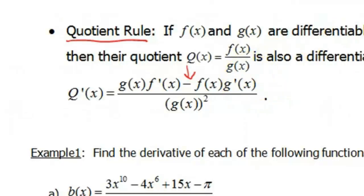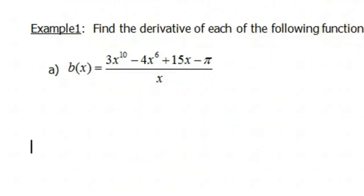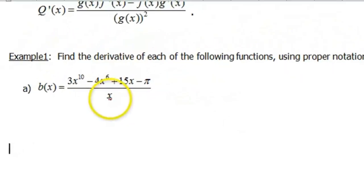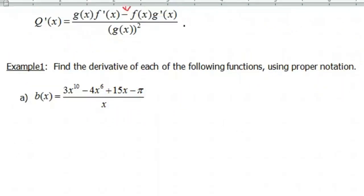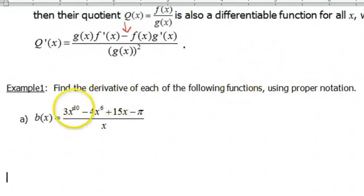Okay, our first example here, the directions say find the derivative of each function using proper notation. Our function we're given is b(x) equals 3x^10 minus 4x^6 plus 15x minus π all over x. So hopefully you can identify that this is a quotient. This obviously has a numerator and a denominator, so I'm gonna call this numerator f, and I'm gonna call this denominator g. So since we want to practice a quotient rule, we're gonna go ahead and do that. But I'm also gonna show you how we can throw a little bit of algebra at this one, and we could have made it even easier.